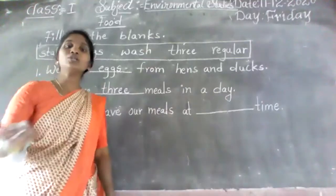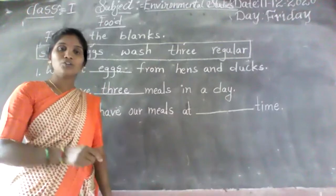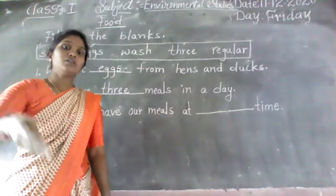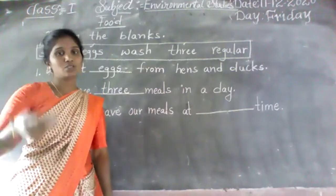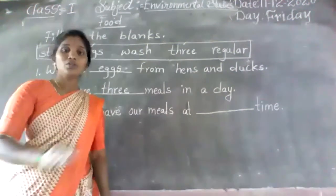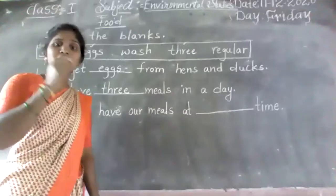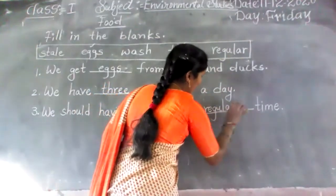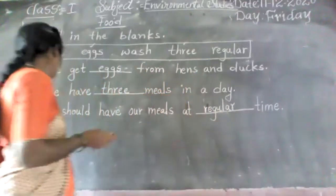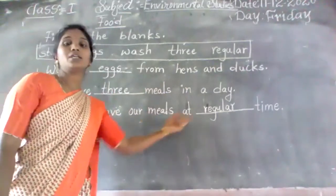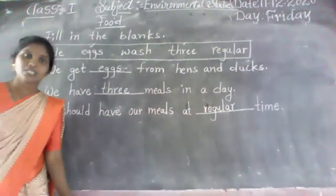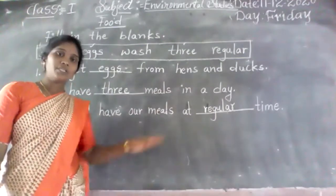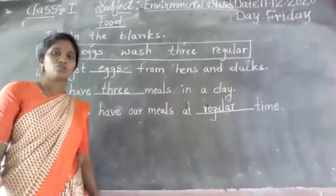We should eat daily at a fixed time. Fixed time means it is a regular time. Today I ate breakfast at 7 o'clock, and tomorrow also at 7 o'clock — that is regular time. Regular means fixed time. We should have our meals at regular time. Breakfast at 7, lunch at 1, dinner at 7:30 or 8 o'clock — that is the regular, fixed time. Write 'regular': R-E-G-U-L-A-R.